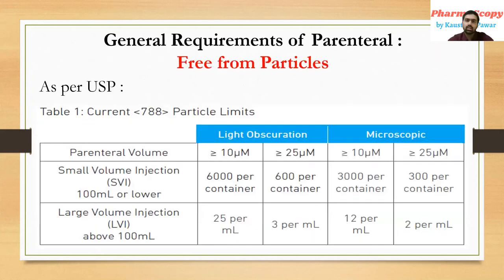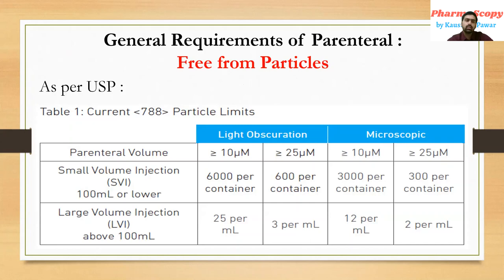Now let's move to the next requirement: free from particles. According to USP, there are two methods to determine particle content in a parenteral product — the light obstruction method and the microscopic method. Based on these two techniques, USP has given limits for how many particles can be present.